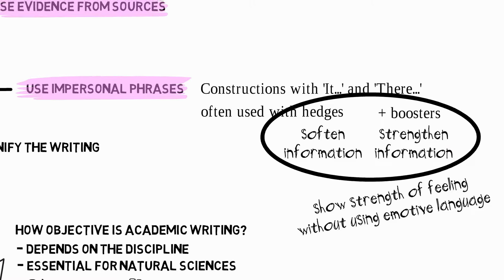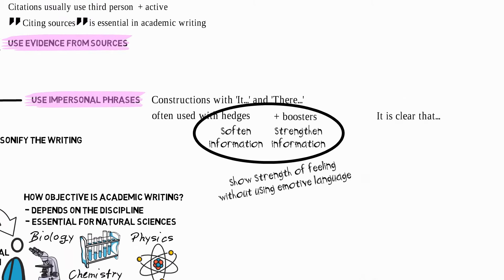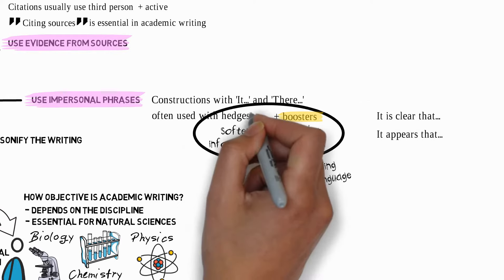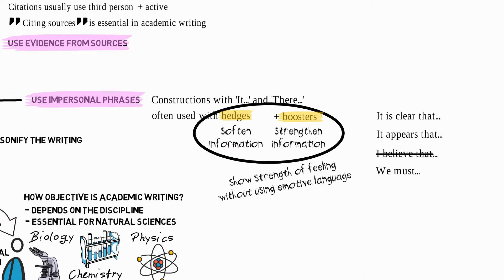For example, it is clear that (so that's a phrase with it which uses a booster, clear), it appears that (another phrase with it which uses a hedge, appear), and those mean the same thing as I believe that or we must.